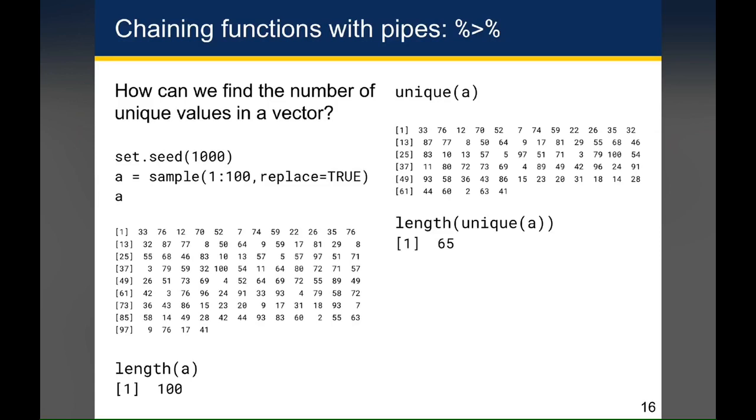If you were to look at just the length of the variable A, which is the vector, you'll notice that it has 100 items in it, which is not surprising because I had asked for a sample to return 100 items.